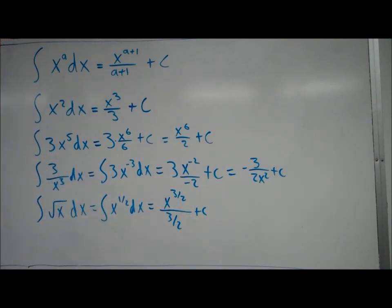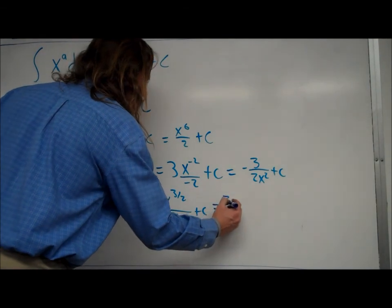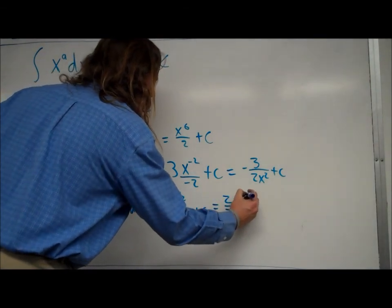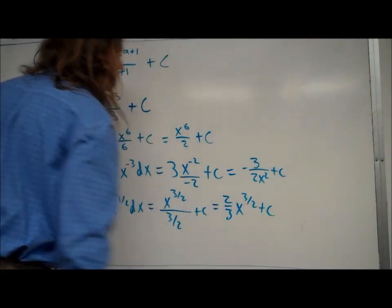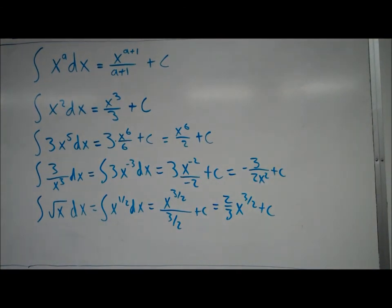instead of dividing by 3 halves, that's the same thing as just multiplying by 2 thirds, so I'll just write it like this, 2 thirds x to the 3 halves, plus c. So that should work out pretty good right there.